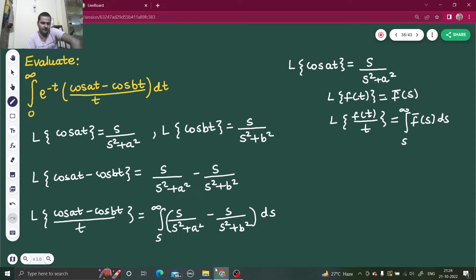If you take s square plus a square as t, so only thing which I will require is 2s in numerator, so just multiply divide by 2. Now if you take denominator as t so you will get the derivative in numerator, so you can write it. So directly I can write its integration has to be equal to log s squared plus a squared minus log s squared plus b squared.